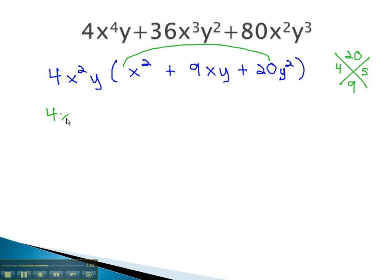Keeping the 4x squared y, or the GCF, in front, we can then factor the remaining trinomial using those numbers. We can use x plus 4 and x plus 5.